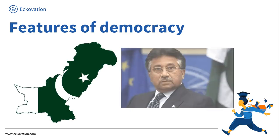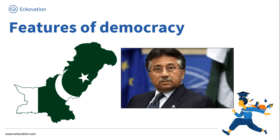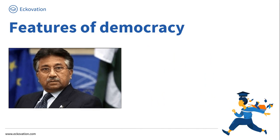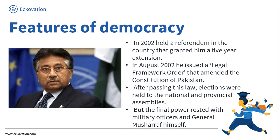General Pervez Musharraf led a military coup in October 1999 in Pakistan, which overthrew a democratically elected government. He declared himself Pakistan's Chief Executive and later declared himself president. In 2002, he held a referendum in which he gave his own government a five-year extension.